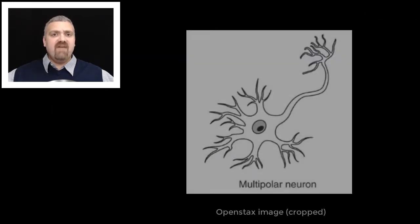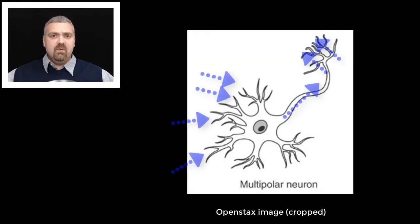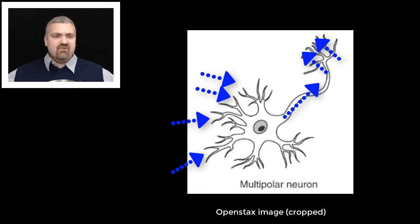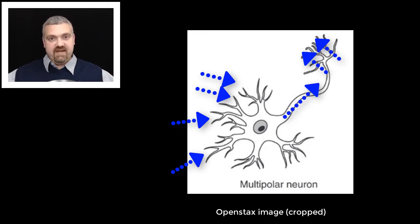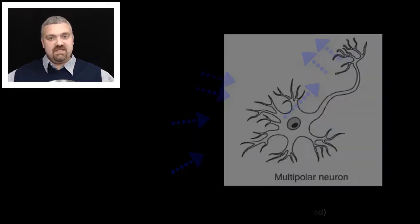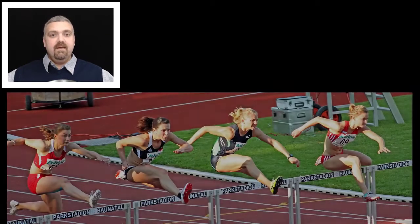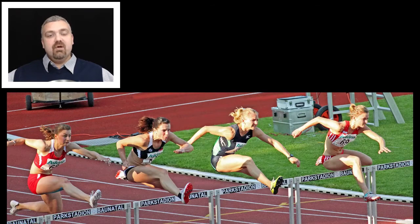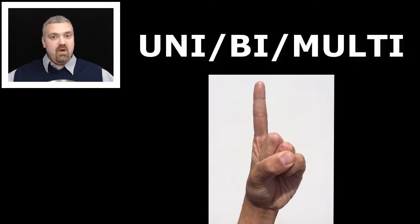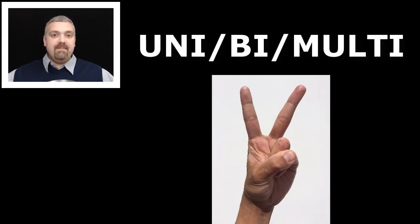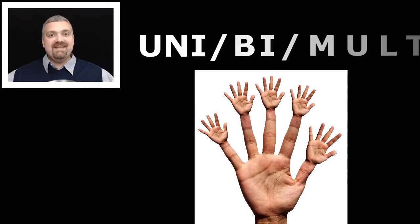And then lastly, we have multipolar neurons, which have many extensions. These are the neuron you generally think of when thinking of a typical neuron. You have just the one axon but potentially thousands of dendrites — many extensions. Multipolar neurons would be your motor neurons, your motor nerves. So uni means one, bi means two, and multi means many.